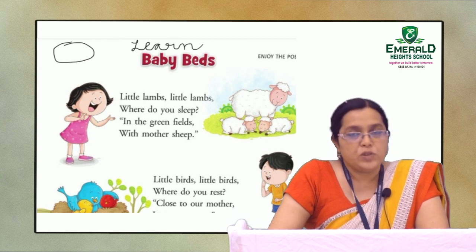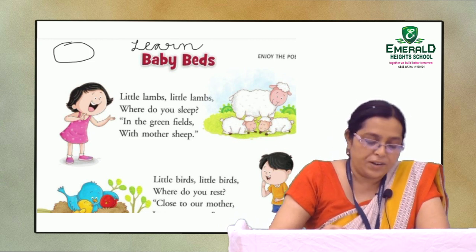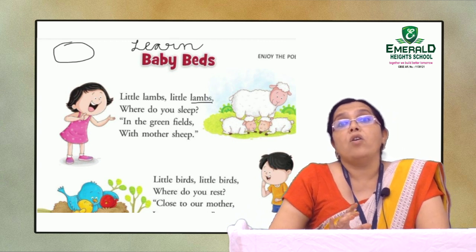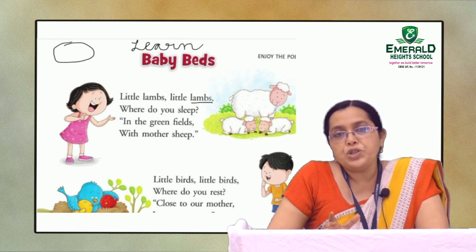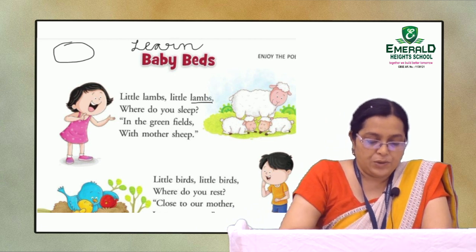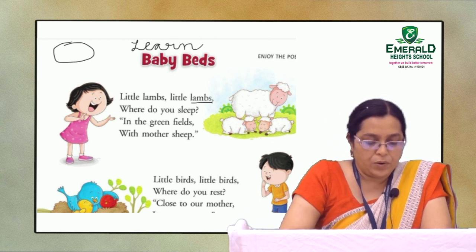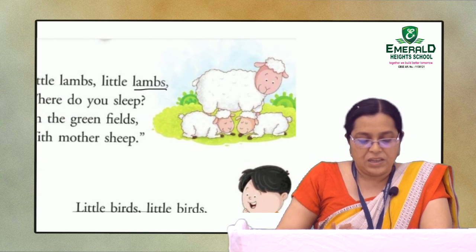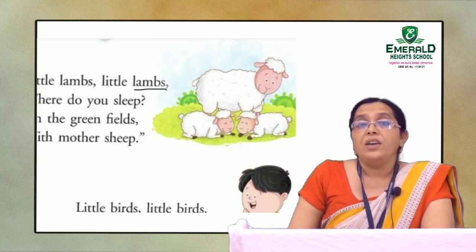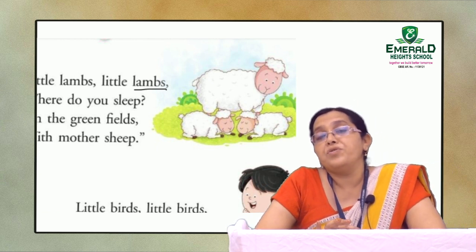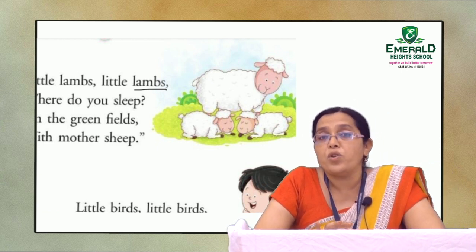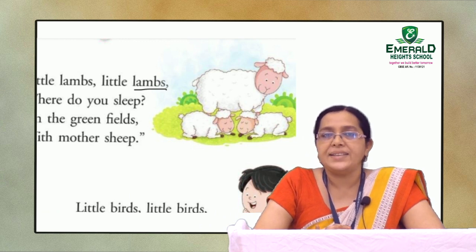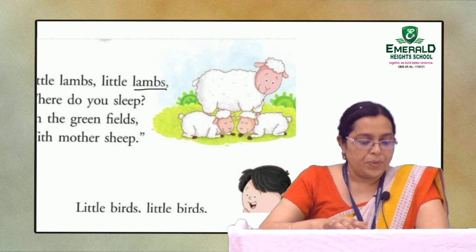Little lambs — what is the meaning of lambs? Underline the word lambs. Lambs is the young one of sheep. Have you seen sheep? This is the sheep and these are the young ones of sheep, called lambs. The spelling of lambs is L-A-M-B-S.